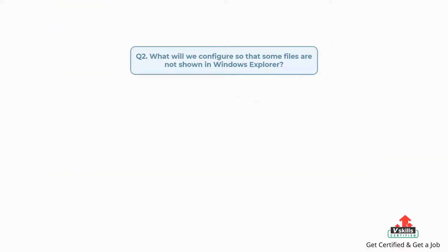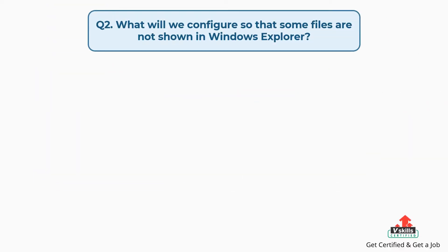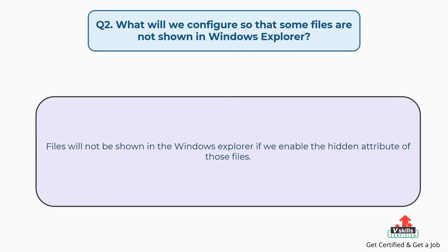Question number two: what will we configure so that some files are not shown in Windows Explorer? The answer is, files will not be shown in Windows Explorer if we enable the hidden attribute of those files.